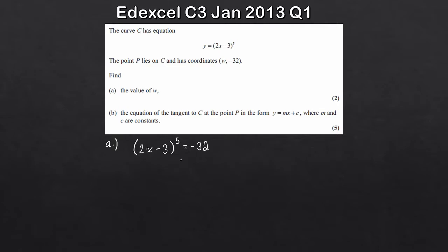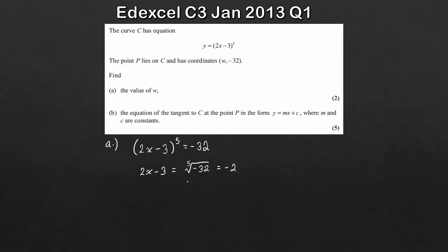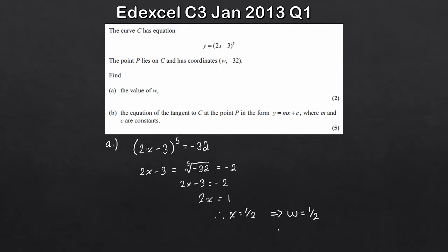To go from (2x - 3)^5 to just (2x - 3), I take the fifth root. Taking the fifth root gives us 2x - 3 = the fifth root of -32. Don't worry about the negative — it's an odd power, so it just gives a negative answer. The fifth root of 32 is 2, so the answer is -2. Therefore 2x - 3 = -2, add 3 to both sides: 2x = 1, so x = 1/2. Since x here is w, w = 1/2.